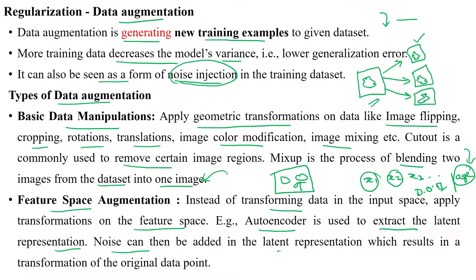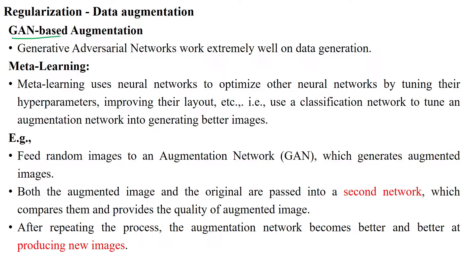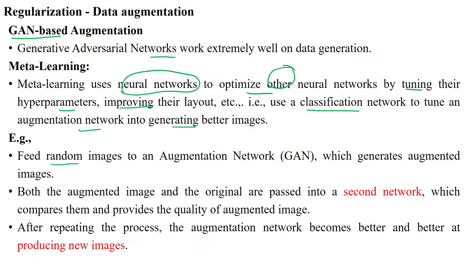Noise can be added into the latent representation, which results in a transformation of the original data point. Another method is GAN-based augmentation — generative adversarial networks are used to generate more images from an existing single image. Meta learning is another kind of augmentation in neural networks, which prevents overfitting by optimizing neural networks, using one neural network to optimize another by tuning hyperparameters and improving their layout.